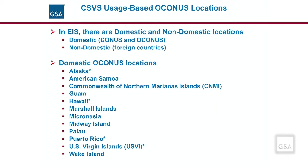In EIS, there are domestic — CONUS and OCONUS — and non-domestic — foreign countries — locations identified. Domestic locations are those within the continental United States, CONUS, and the locations outside the continental United States, OCONUS. Non-domestic locations are foreign countries.